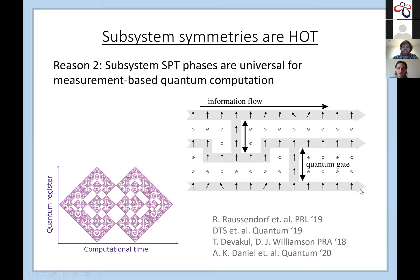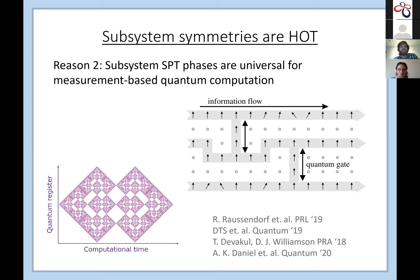Another reason subsystem symmetries are interesting is that if you define a symmetry-protected topological phase using a subsystem symmetry, you can find phases that are universal for measurement-based quantum computation. In MBQC, you start with an initially entangled state on a 2D square lattice, perform single-site measurements, and that alone simulates universal quantum computation. What has been shown is that states in non-trivial subsystem SPT phases are examples of universal resources, giving a nice relationship between condensed matter physics and quantum computation.